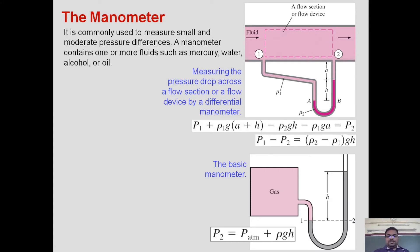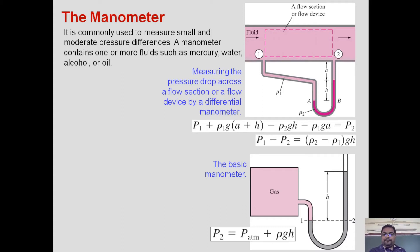Writing the pressure equation at the reference line: for the left-side limb, I write p₁ plus ρ₁g(a+h), where ρ₁ is the density of the medium flowing through the pipe and (a+h) is the total height from the reference line up to point 1. For the right side, going in the opposite direction, I write minus ρ₂g h, where ρ₂ is the density of the manometric liquid, then again ρ₁g a.